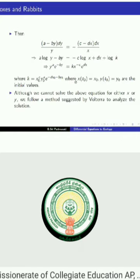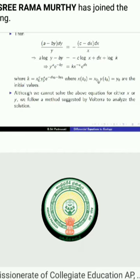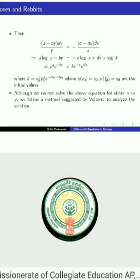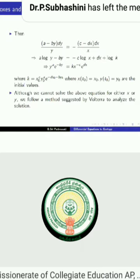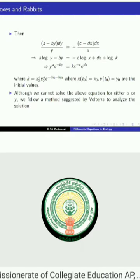The constant k can be written in terms of x₀, y₀, a, b, c, and d. We cannot actually solve the equation for either x or y as a function of t, but we will be able to infer something very important from this equation by following a method suggested by Volterra to analyze the situation.